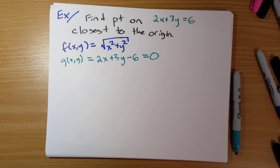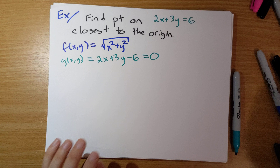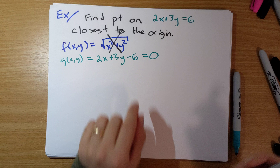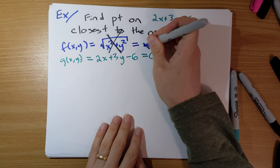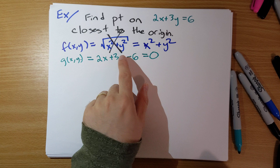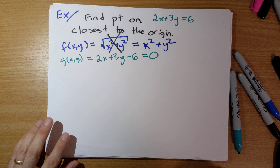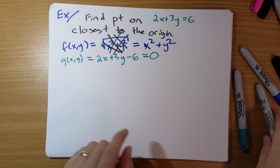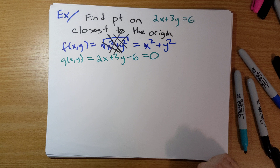Now, to make our lives just a little bit easier — I alluded to this in the previous video — instead of minimizing the square root of x squared plus y squared, we're going to minimize x squared plus y squared itself. Because any pair x, y that minimizes x squared plus y squared will also minimize the square root of x squared plus y squared. This will make things computationally much simpler.